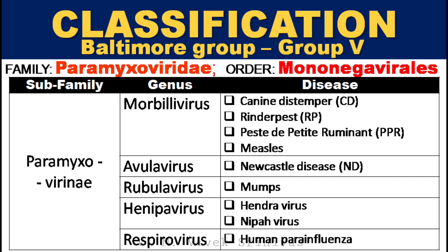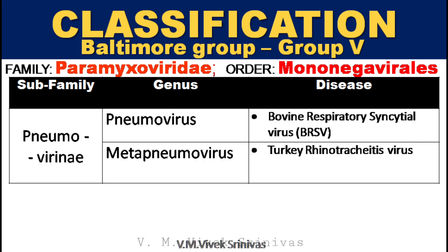Classification. Newcastle disease belongs to the Paramyxoviridae family, classified under Baltimore Group 5, with the order Mononegavirales. Some veterinary important viral diseases under this family are canine distemper, rinderpest, and PPR under the genus Morbillivirus, and Newcastle disease under the genus Avulavirus. Other diseases under this family include measles, mumps, Hendravirus, Nipah virus, human parainfluenza, bovine respiratory syncytial virus, and turkey rhinotracheitis virus.